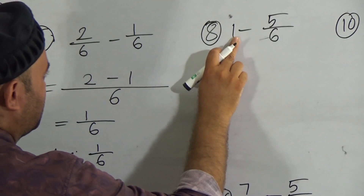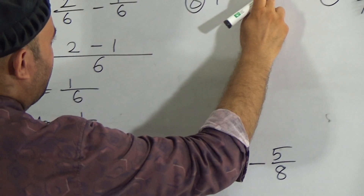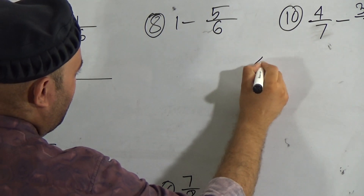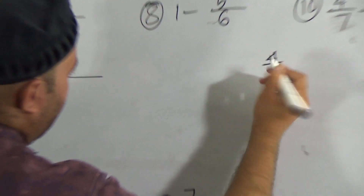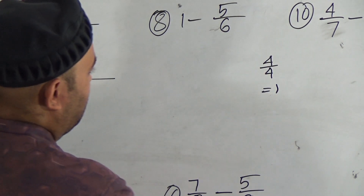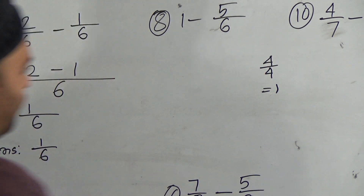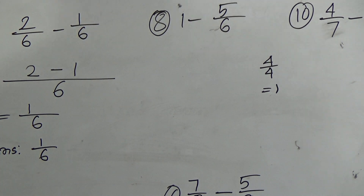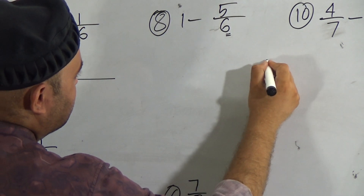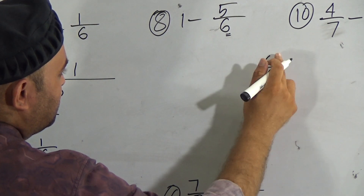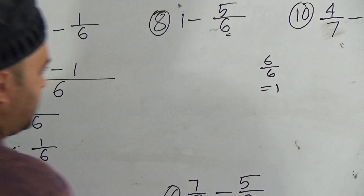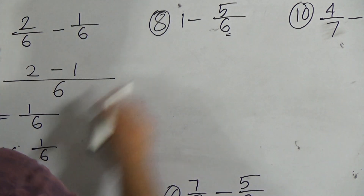Question number 8: 1 minus 5/6. We can write 1 as 6 out of 6 — do you know why? Because 6 divided by 6 equals 1. Since the denominator here is 6, we can write 6 by 6, which equals 1, because 6 divided by 6 is 1.